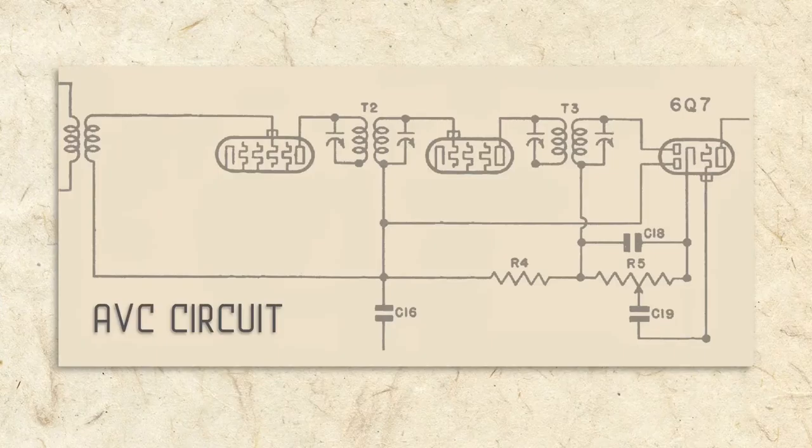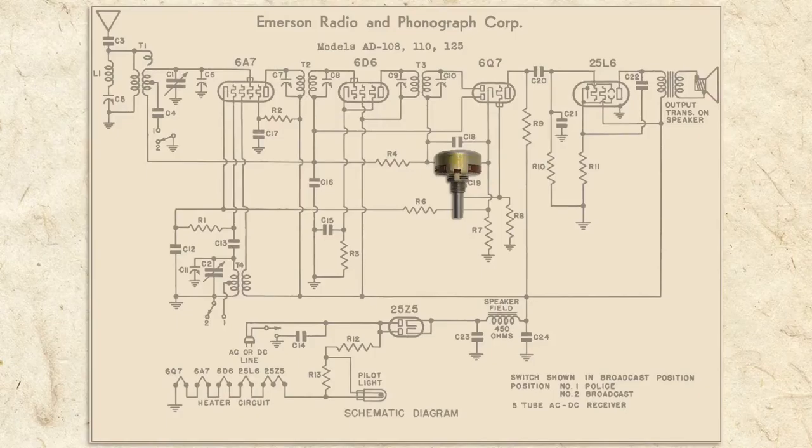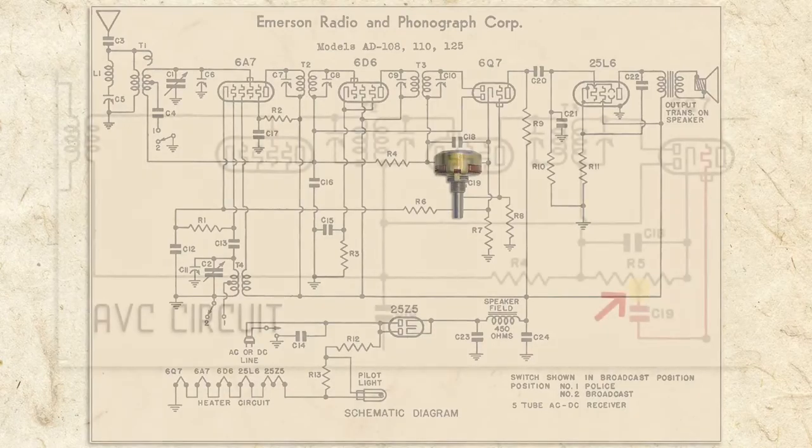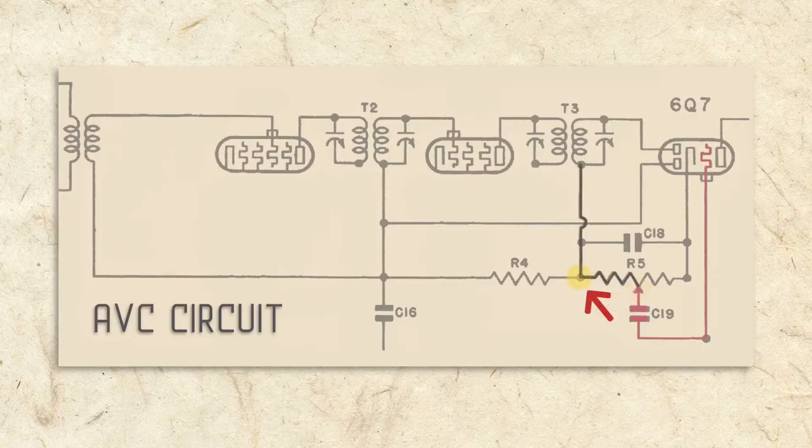As we've learned, the audio signal comes from this point in the volume control. I'll discuss the volume control in more detail in the next section. When the signal at this point is positive, the signal at this point is negative. Both signals are exactly the same but opposite in polarity.